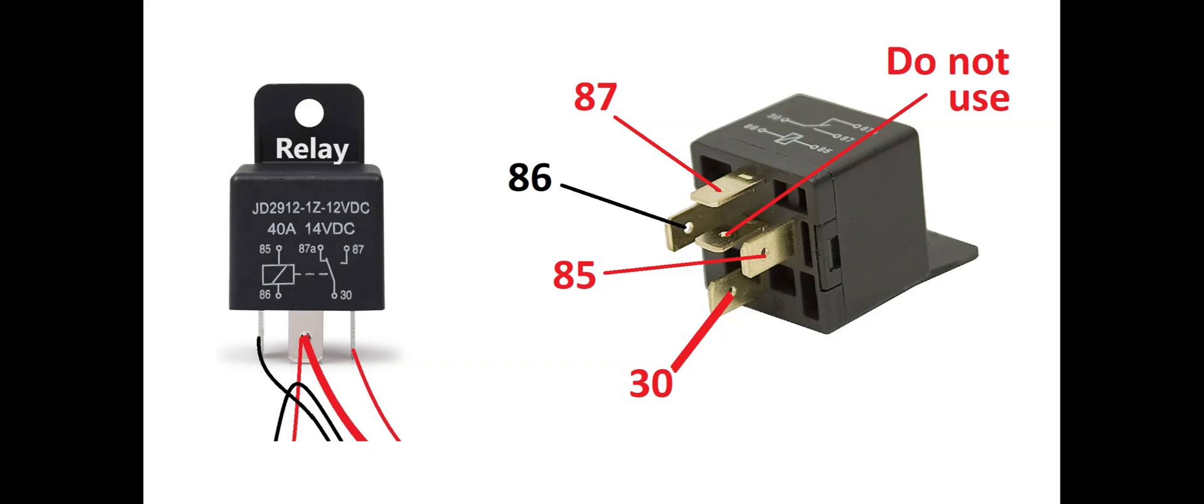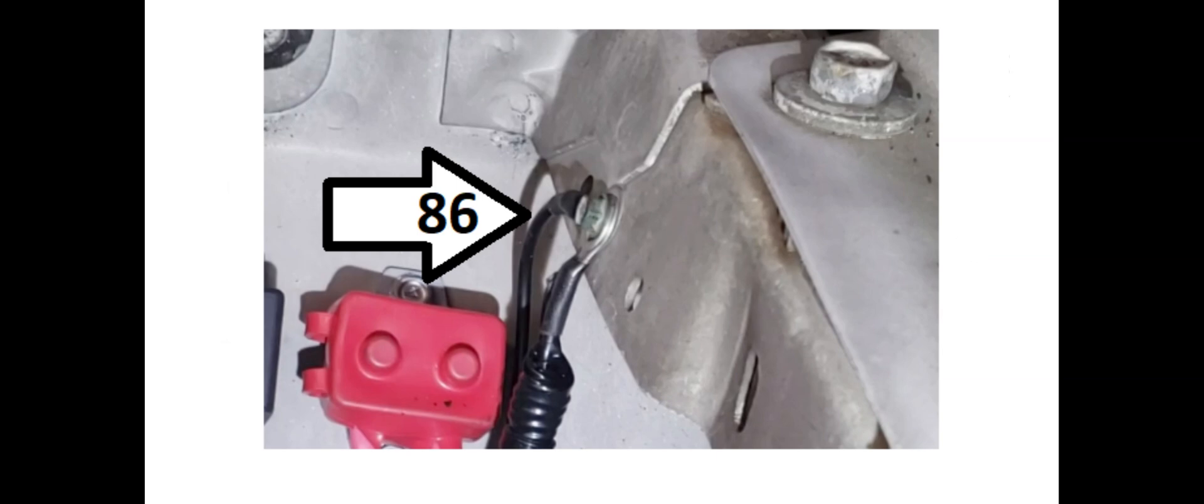The 86 leg is a 14 gauge black wire that supplies ground for your relay. I prefer to keep it close to the relay and share it with the ground for the pump so you only have one ground to check when diagnosing your electrical system.